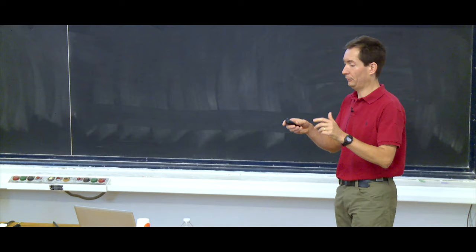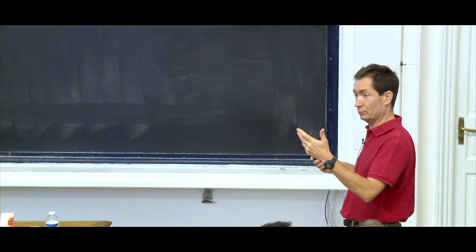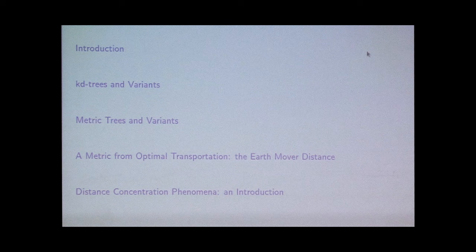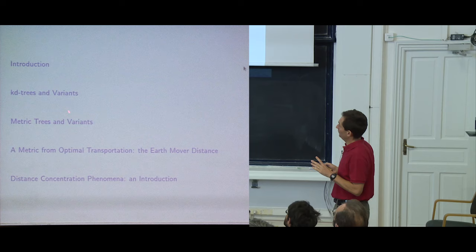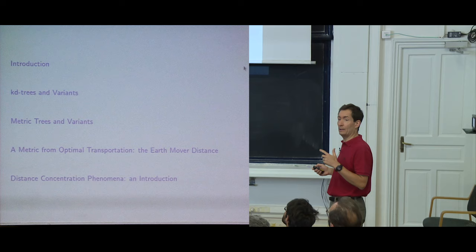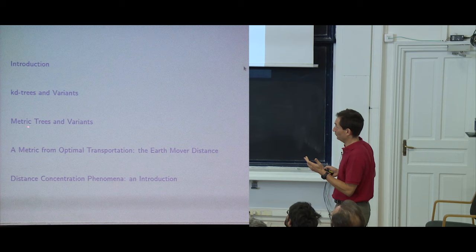Even if you are not strictly interested in these topics, these are algorithms which should be of interest for your research. The outline: I'll begin with an introduction, then cover KD trees — a simple, versatile, and efficient solution for nearest neighbors — and variants of such data structures for points in Euclidean space. Then we'll switch to the general case where objects have a metric but no clear embedding in geometric space.